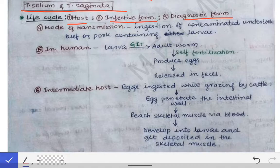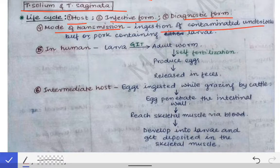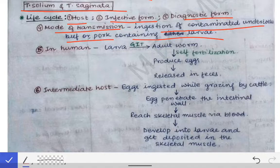The mode of transmission in the life cycle is simply the ingestion of contaminated undercooked beef or pork containing the larva. That is the way of transmission of infection for Taenia solium and Taenia saginata.